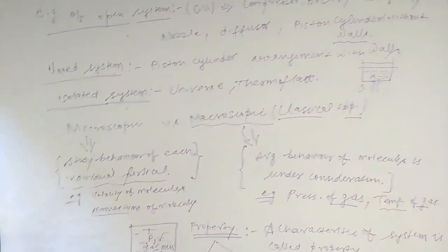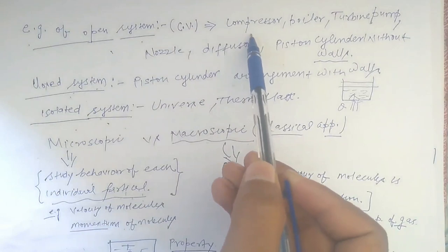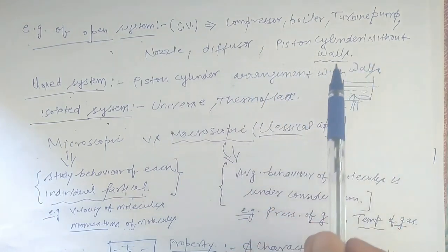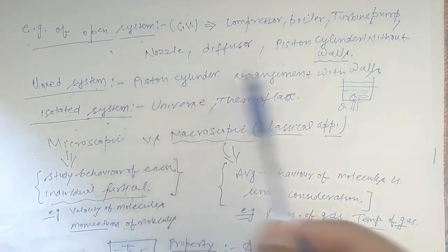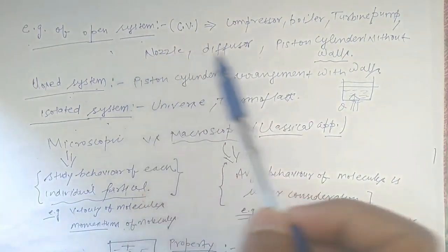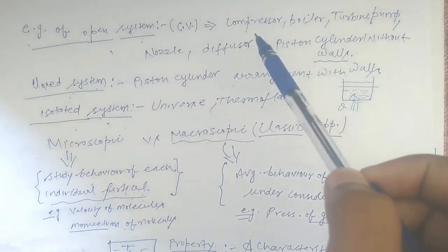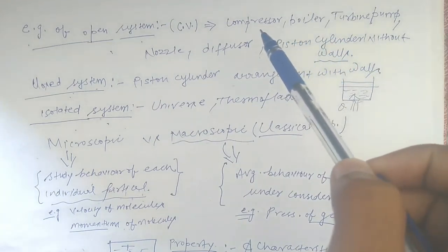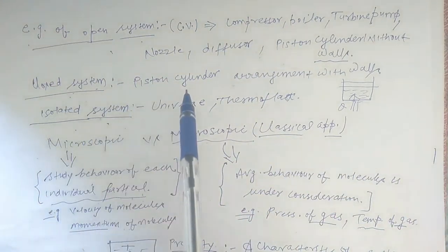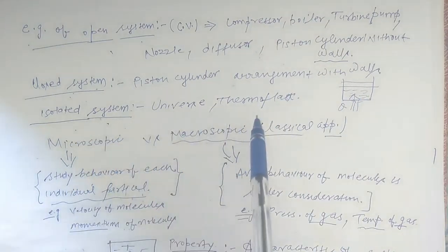The third is isolated system — in this, neither mass transfer nor energy transfer occurs. Examples of open system: compressor, boiler, turbine, pump, nozzle, diffuser, piston-cylinder arrangement without valves. Example of closed system: piston-cylinder arrangement with walls. Isolated system examples: the universe and a thermos flask — where no mass or energy exchange is possible.